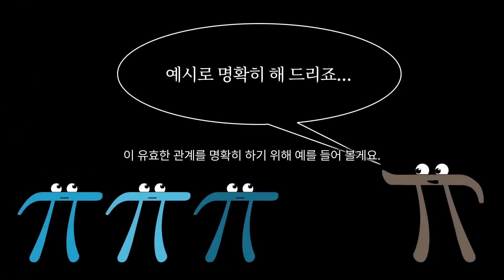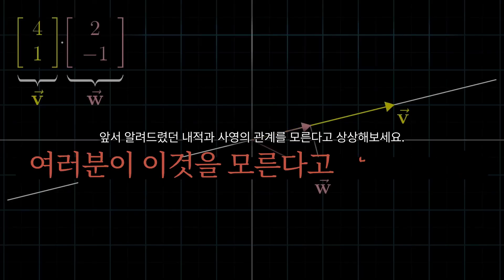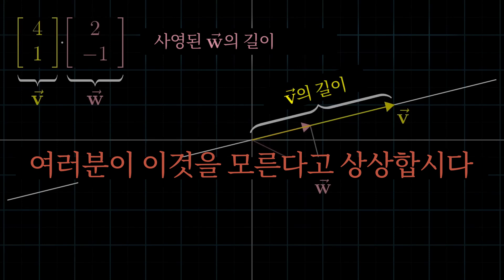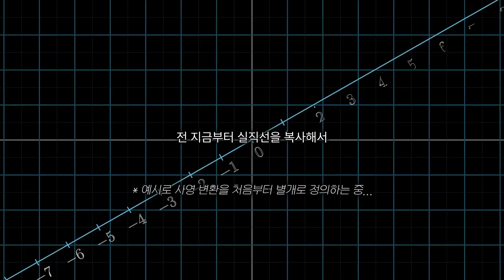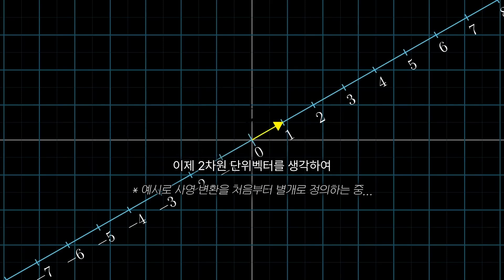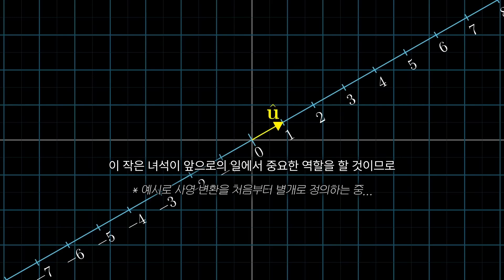Let me show an example that clarifies the significance, and which just so happens to also answer the dot product puzzle from earlier. Unlearn what you have learned, and imagine that you don't already know that the dot product relates to projection. What I'm going to do here is take a copy of the number line and place it diagonally in space, with the number 0 sitting at the origin. Now think of the two-dimensional unit vector whose tip sits where the number 1 on the number line is — I want to give that guy a name: u-hat. This little guy plays an important role in what's about to happen, so just keep him in the back of your mind.